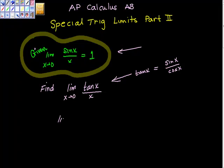So I'm going to rewrite this and say, let's find the limit as x goes to zero of sine of x over cosine of x. Now, of course, what I've just written is just tan x, isn't it? Over x.